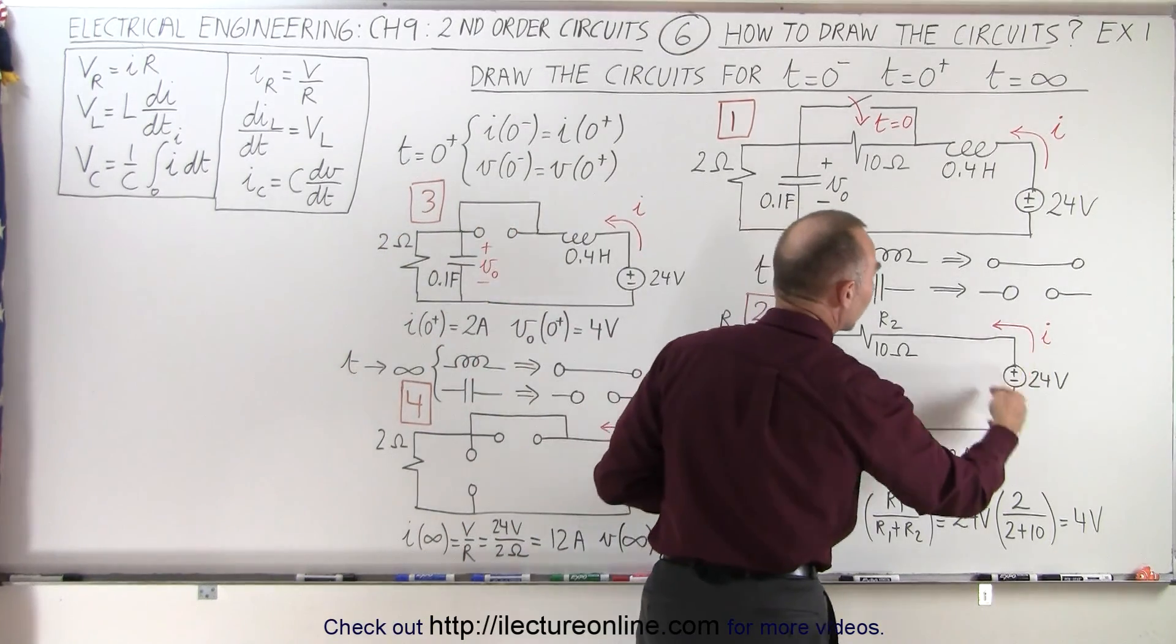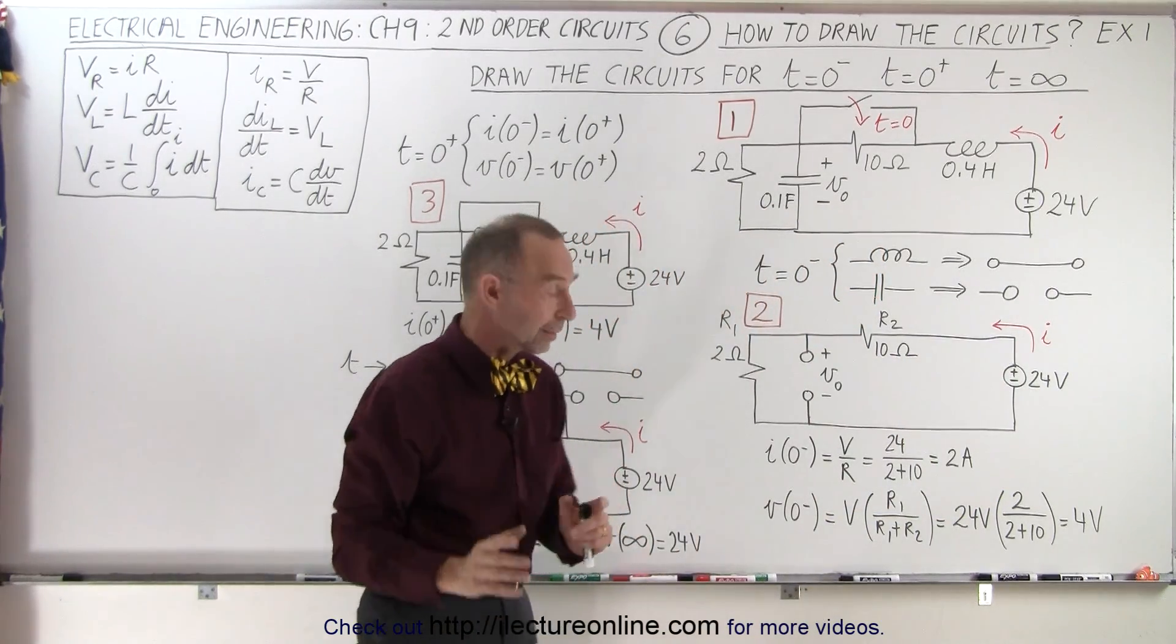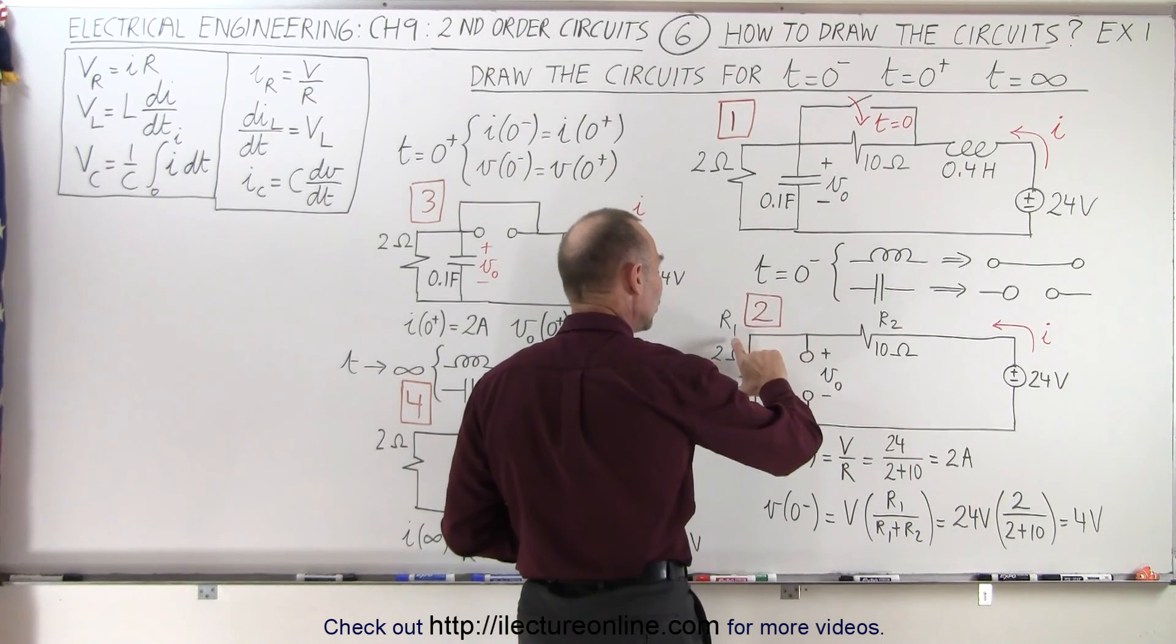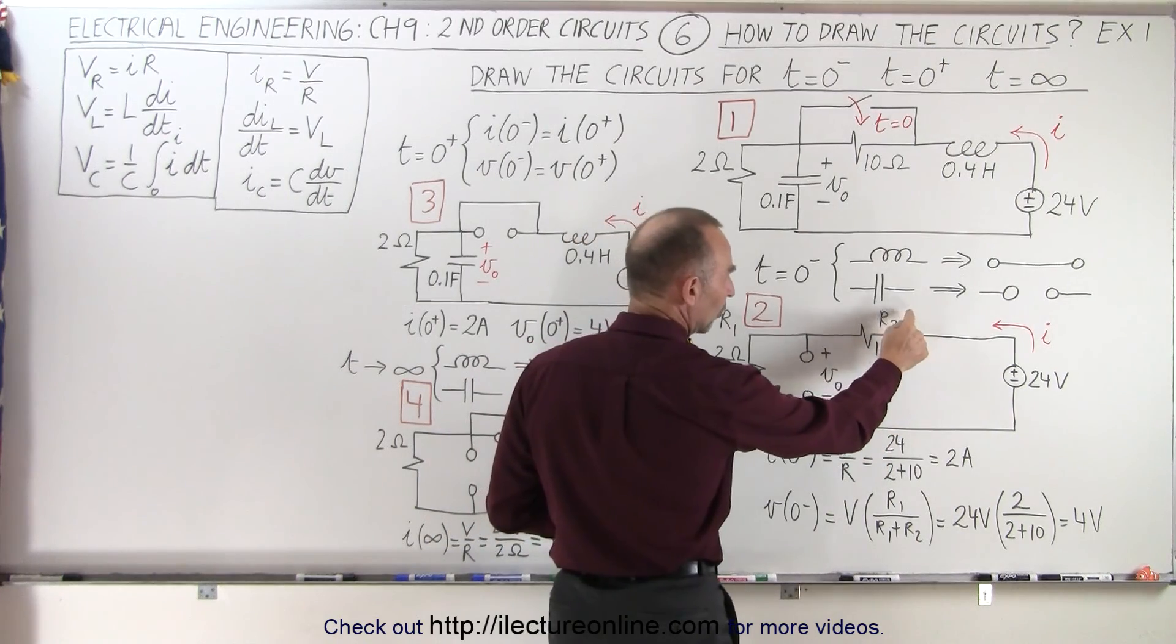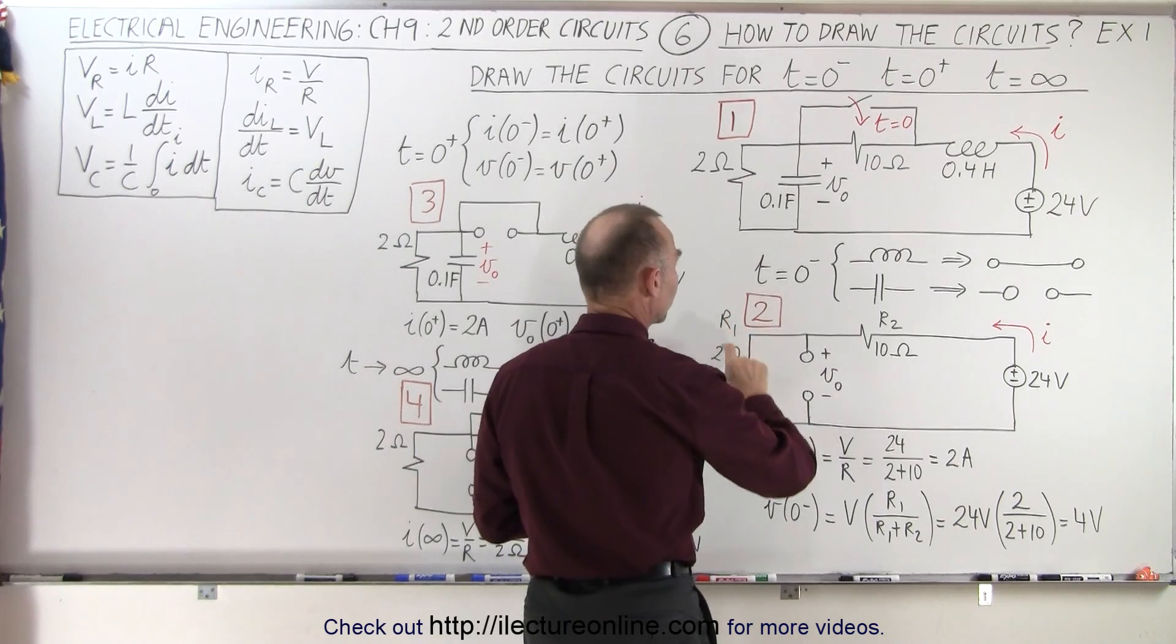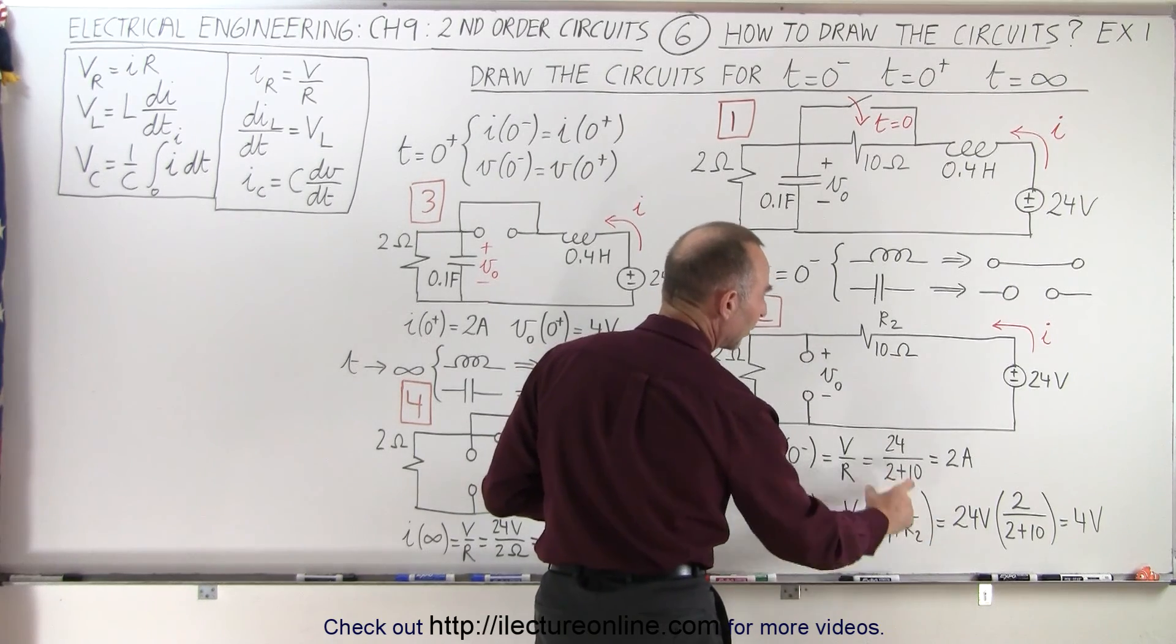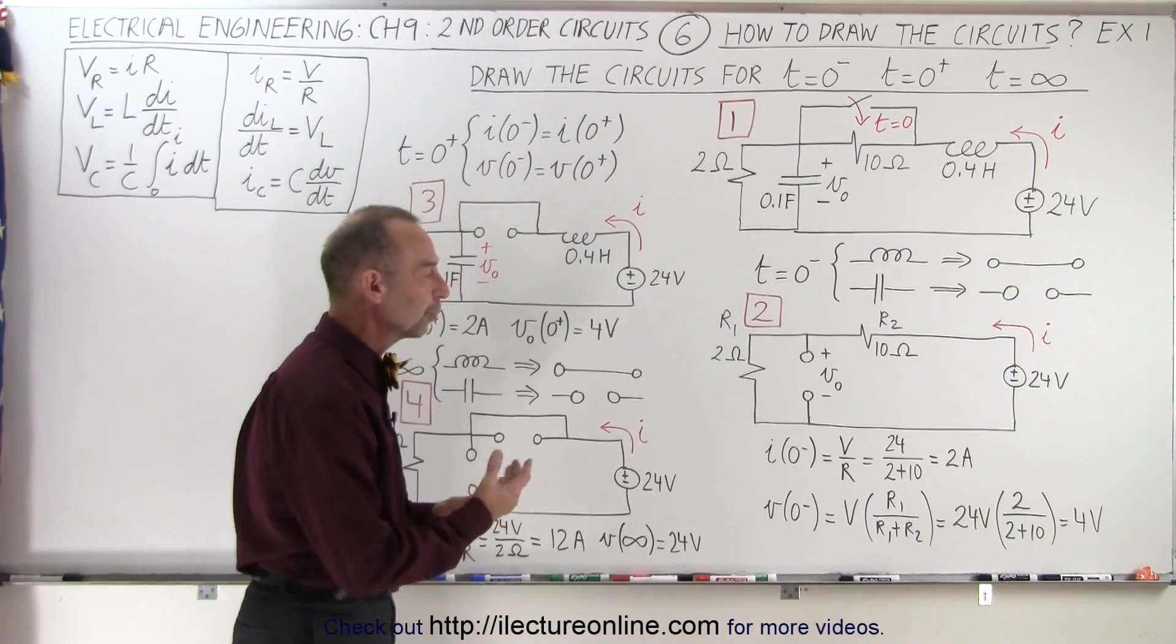So what does the circuit look like right before we close the switch? It looks like there is a voltage supply, 24 volts, and two resistors in series. So we can calculate the current being V over R, which is 2 amps, and the voltage across the capacitor will be the same as the voltage across this resistor right here. If we call this resistor R1 and we call this resistor R2, then you can see it's simply a ratio of the voltage across this resistor divided by the voltage across both resistors. So we can see that's equal to 24 volts times the ratio of R1 divided by the total resistance, or 2 divided by 12. That's 1 sixth of 24 volts, which is 4 volts.